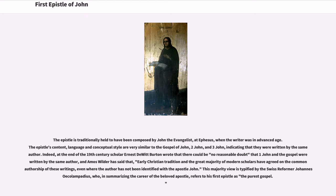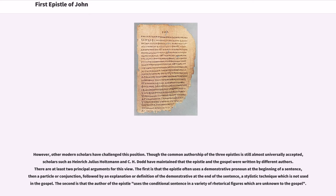This majority view is typified by the Swiss reformer Johannes Oecolampadius, who, in summarizing the career of the beloved Apostle, refers to his first epistle as 'the purest Gospel.' However, other modern scholars have challenged this position. Though the common authorship of the three epistles is still almost universally accepted, scholars such as Heinrich Julius Holtzmann and C.H. Dodd have maintained that the epistle and the Gospel were written by different authors. There are at least two principal arguments for this view.